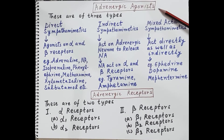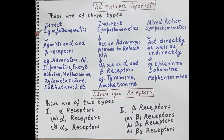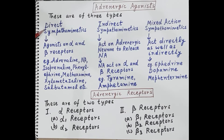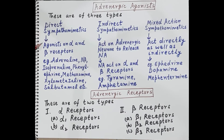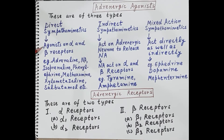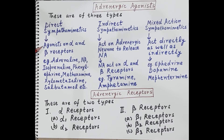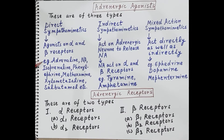Adrenergic agonists are of three types. The first type are direct sympathomimetics. These are drugs which act as agonists on alpha and beta receptors — they bind to alpha and beta receptors, show affinity as well as efficacy, and produce a pharmacological response. Examples include adrenaline, noradrenaline, and isoprenaline.